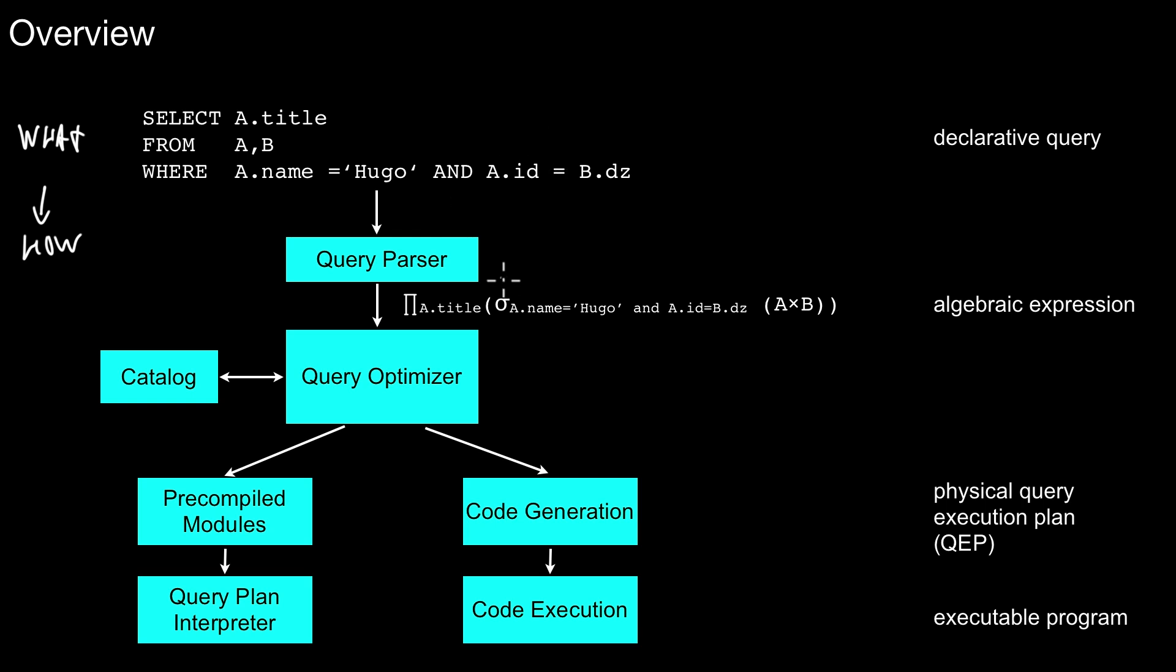Then comes the query optimizer. And the query optimizer will rely on information that is available in the catalog, in the database catalog. Recall that the database catalog contains all the metadata of the database. So the names of tables, all the schemas, sizes of the different data types used, all the domains.